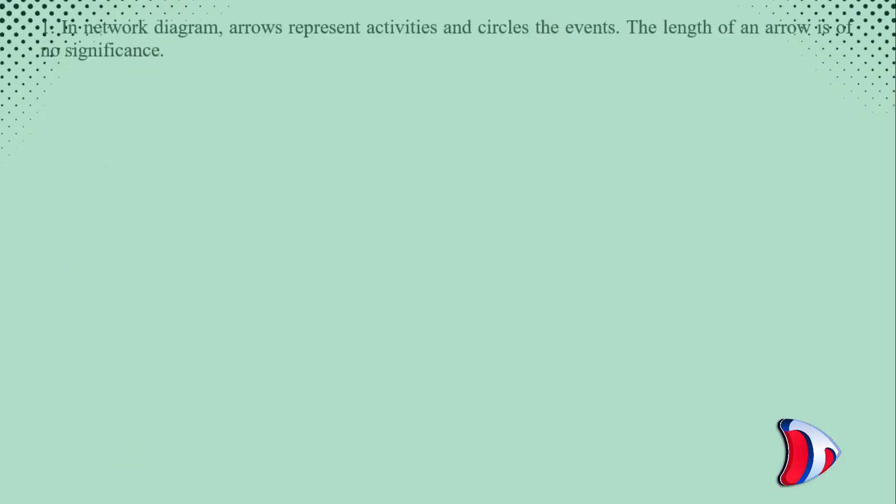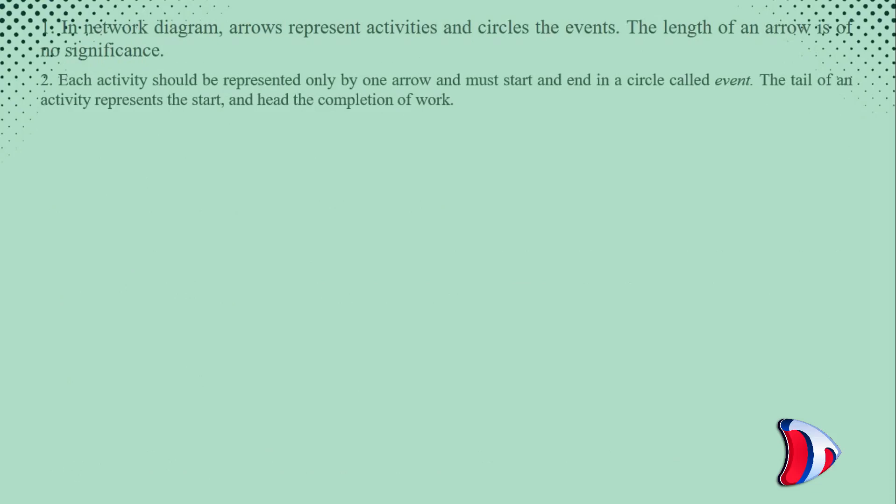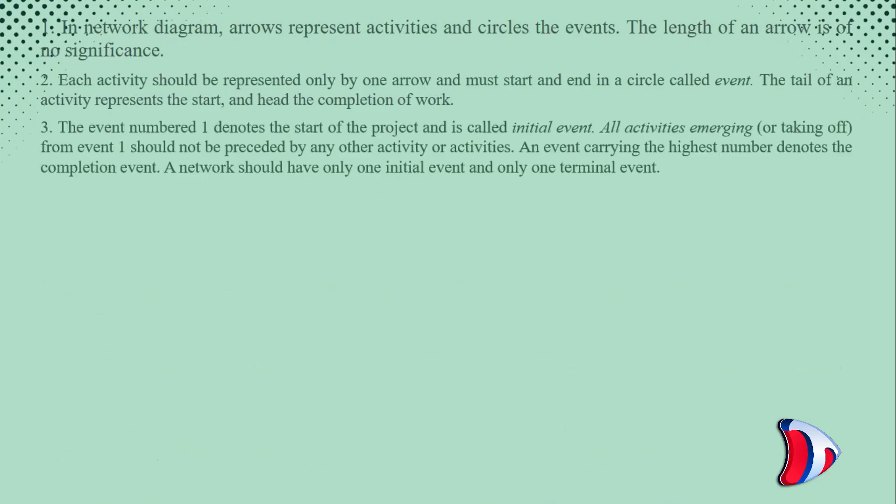In network diagram arrows represent activities and circles the events. The length of an arrow is of no significance. Each activity should be represented only by one arrow and must start and end in a circle called event. The tail of an activity represents the start and head the completion of work.